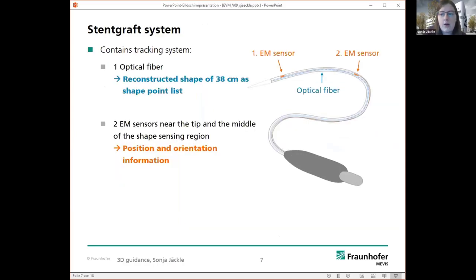So how have we done that? In this work we tracked a stent graft system. So we bought a stent graft system, disassembled it, and integrated the tracking systems. One optical fiber was integrated in the first part of the stent graft system. And this allows us to reconstruct the shape of the 38 centimeters in the front region.